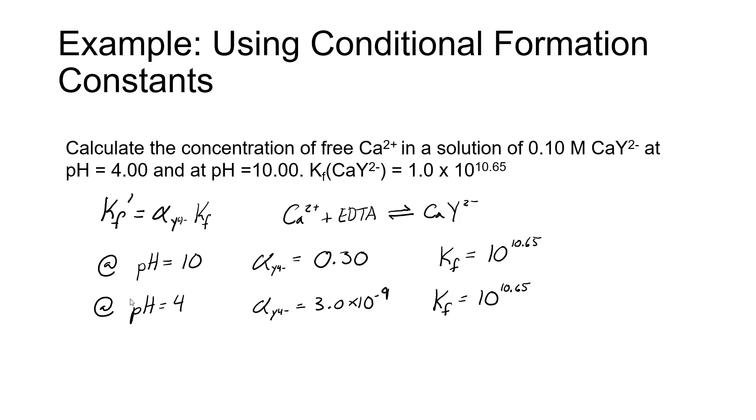From tables 12.1 and 12.3, we know that at pH 10, the alpha value is 0.30, and the formation constant value is 10 to the 10.65. At pH 4, the kf is no different, but the alpha value is different, so the conditional formation constant will be different.